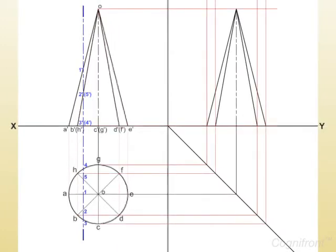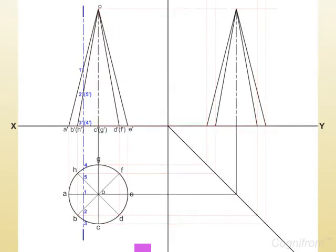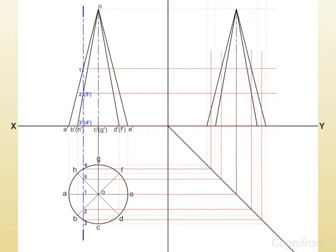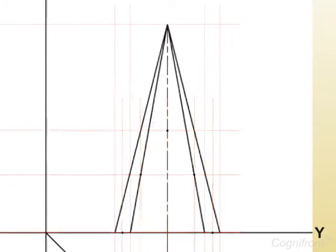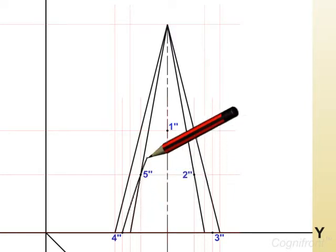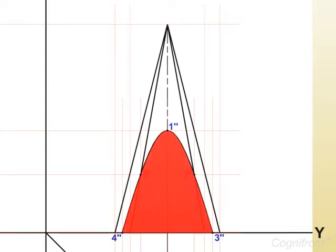To obtain the true shape of the section, we will draw projectors from these points to the side view so that they intersect at 1' 2' 3' 4' 5'. Observe, joining these points by a smooth curve represents the true shape of the section.